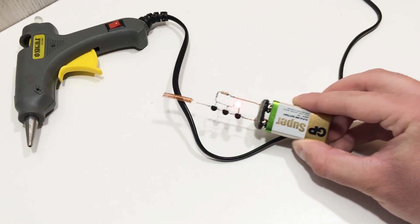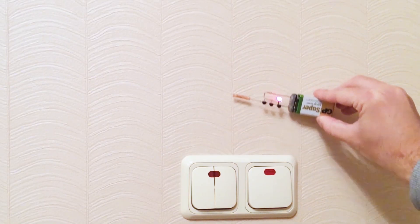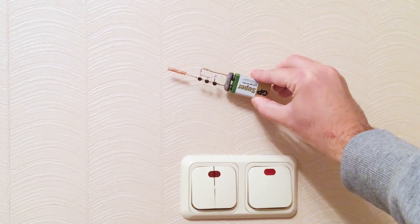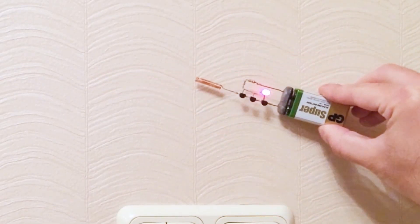This little DIY device is super useful when you're doing home repairs or drilling into walls because it helps you avoid live electrical wires and hidden metal objects. It's simple to make, runs on a 9-volt battery, and only requires a handful of basic electronic components.